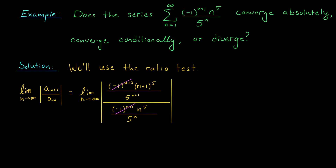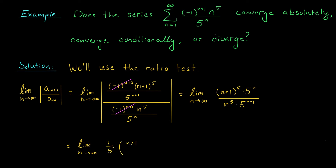Since everything in sight is positive, we can ignore the absolute value bars. What we get is the limit as n→∞ of (n+1)^5 · 5^n divided by n^5 · 5^{n+1}. The 5^n over 5^{n+1} simplifies to 1/5, and we can group the remaining terms, giving us the limit as n→∞ of (1/5) · [(n+1)/n]^5. The stuff in the brackets tends to 1, so our final answer is 1/5. That's less than 1, so according to the ratio test, the series converges absolutely.